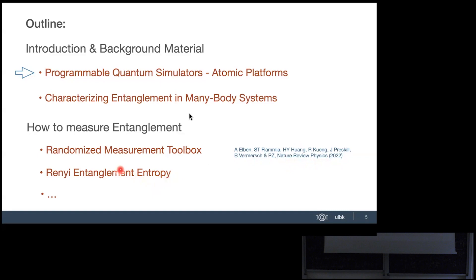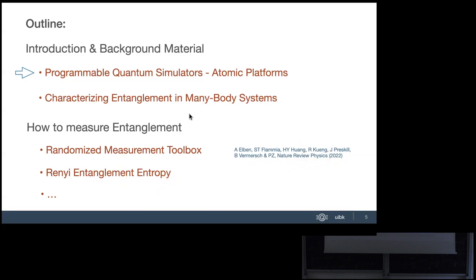Over the last few years we developed something called the randomized measurement toolbox. There's a review written up about two years ago in Nature Physics that is very readable and contains the main references. We'll talk about things like how we can measure Rényi entanglement entropy — our first application — measuring entanglement via the purity of the reduced density matrix.